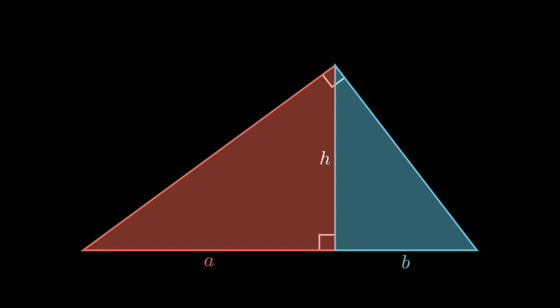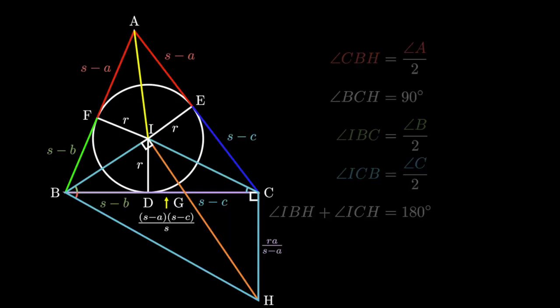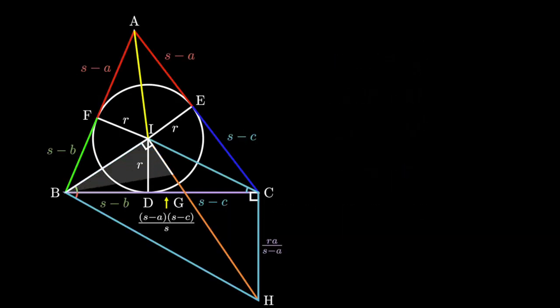Anyways, since the two triangles are similar, we can write out this ratio between the side lengths. The altitude h in this triangle is the square root of AB. Using that formula, we can find r. r equals the square root of s minus a times s minus b times s minus c over s.